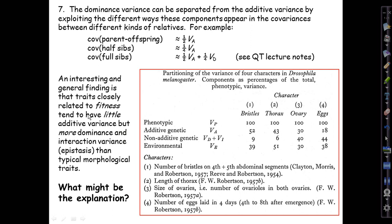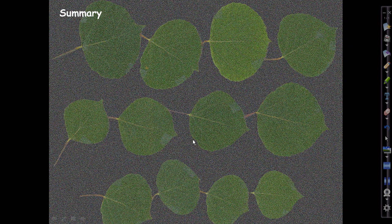A very interesting finding is that traits closely related to fitness tend not to have much additive variance, but they tend to have more dominance and interaction variance than typical morphological traits. I invite you to think what natural process might lead to that pattern, which is illustrated here in these classic data on bristle numbers.